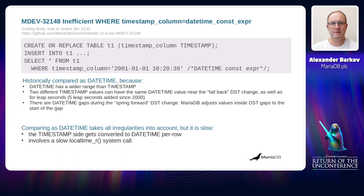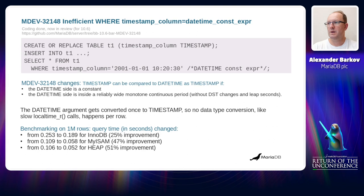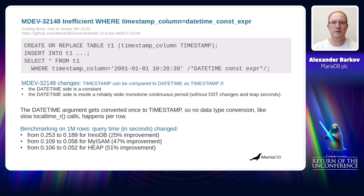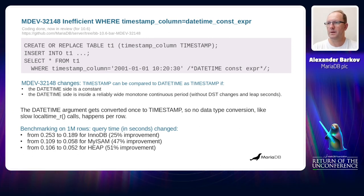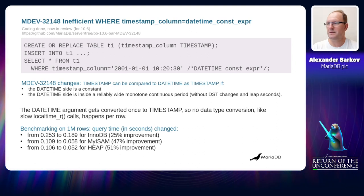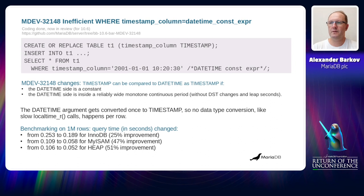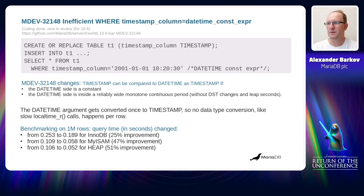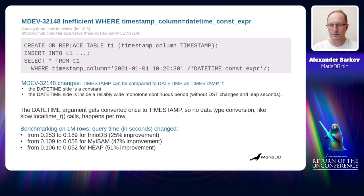Comparing operands as datetime takes all these irregularities into account, but it is quite slow. The timestamp side gets converted to datetime per row, and this involves a slow local time system call. This task implements the idea that when the datetime side is a constant and is inside a reliable wide monotone continuous period, those arguments can be compared as timestamps. We can compare the datetime argument once to timestamp before the statement prepare stage, and then during row processing, no data type conversion is needed anymore. Benchmarking on one million rows showed quite a good performance improvement.